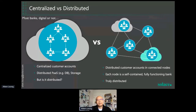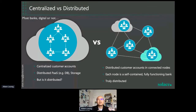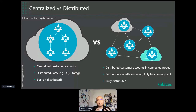Another approach is to divide customer accounts into smaller, more manageable portions — more scalable in terms of horizontal scale — and make them connected nodes. Each node is a portion of customers. If you've got a 10 million account bank, you could have 1 million per node. Each node is a self-contained, fully functional bank — a small bank — and all those small banks are interconnected and operating seamlessly, very similar to real-world physical branches.